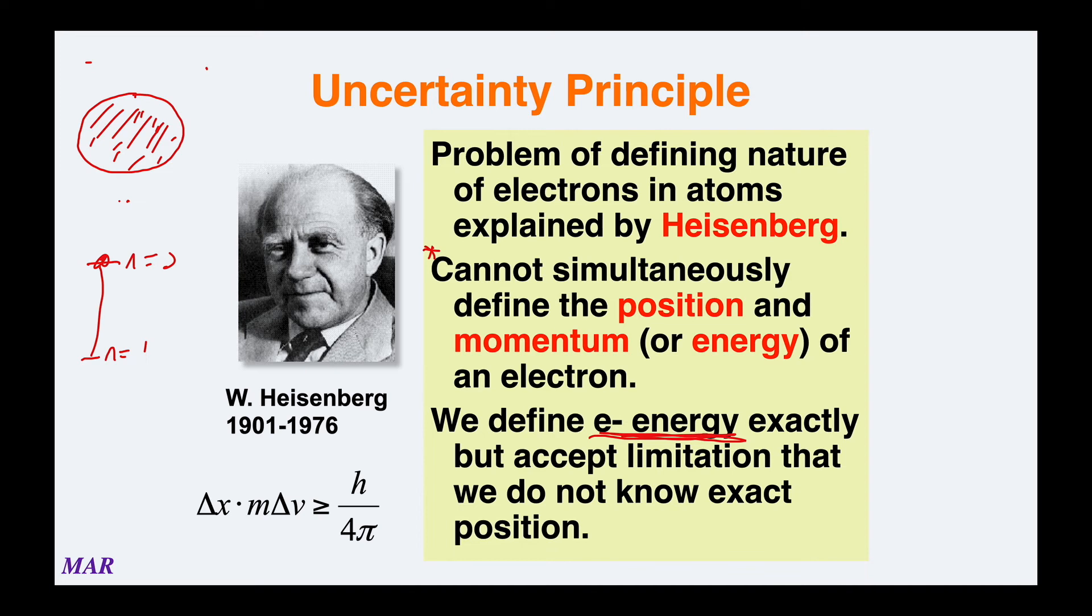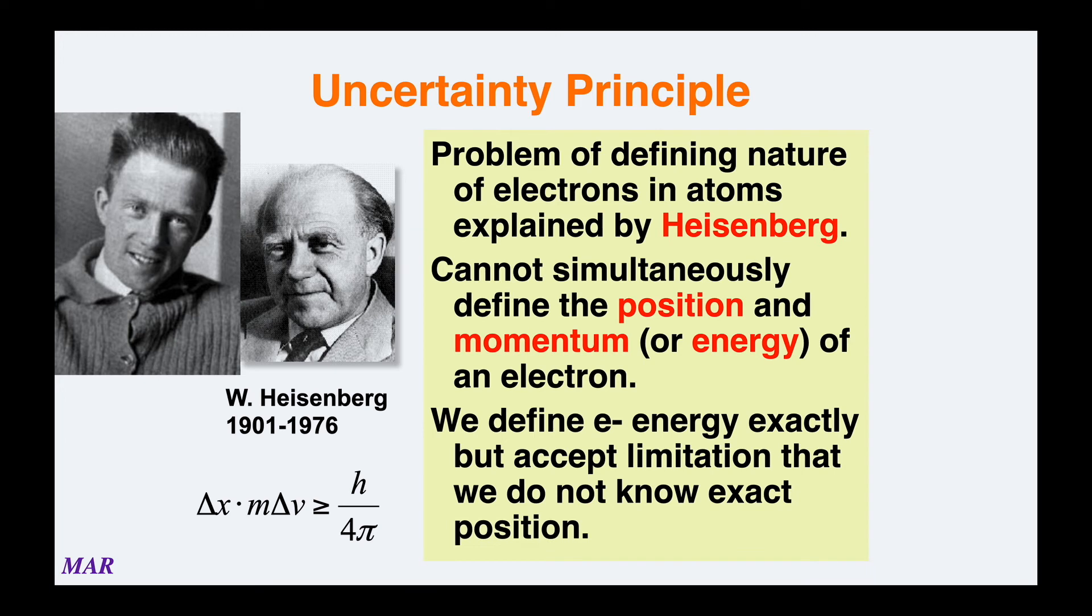Heisenberg's uncertainty principle says we have to make a choice, and we choose as chemists energy over position, so there's always going to be uncertainty about where the electron is. Some people think he was a hardcore Nazi, others say he was trying to prevent the Nazis from developing the bomb. The uncertainty principle is very interesting.